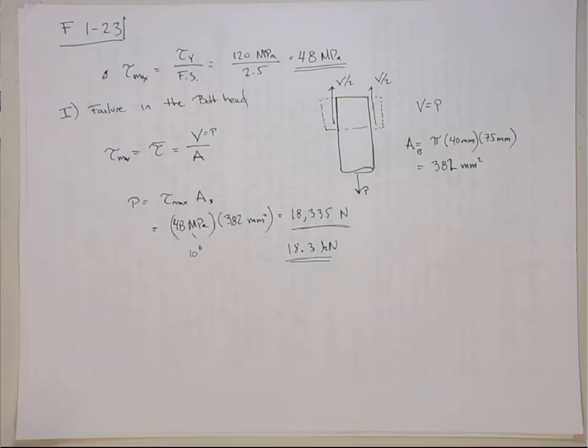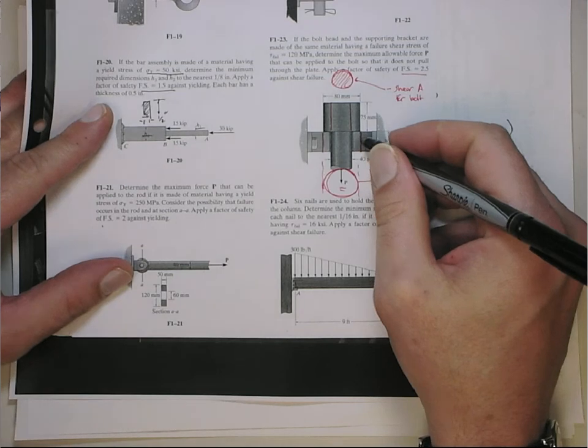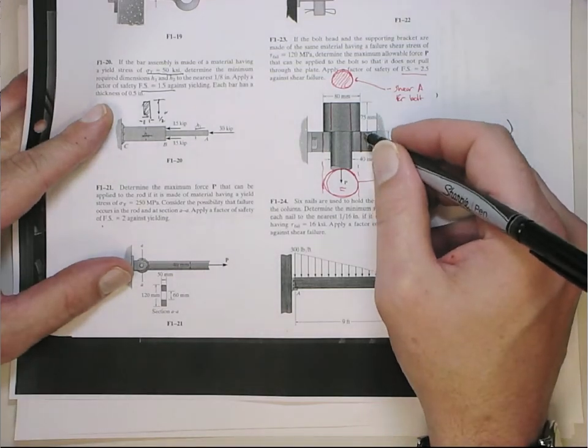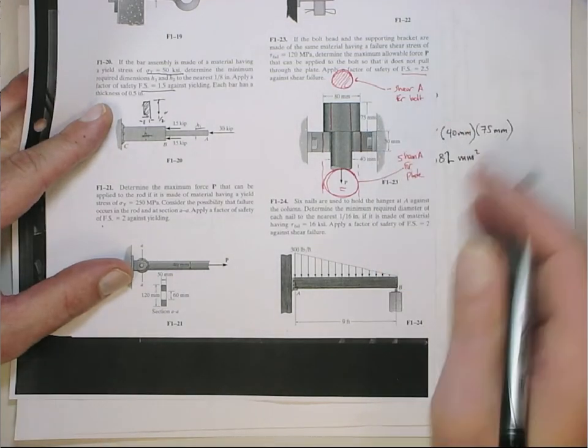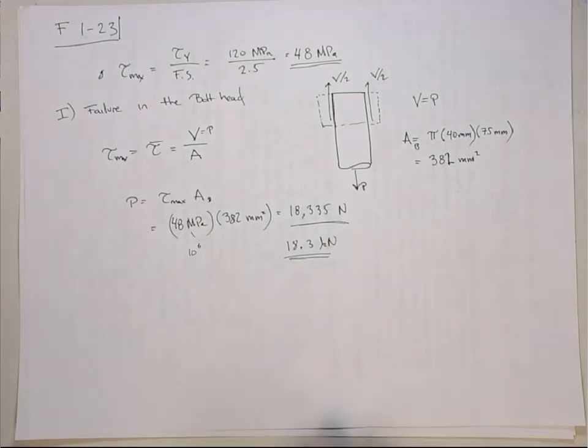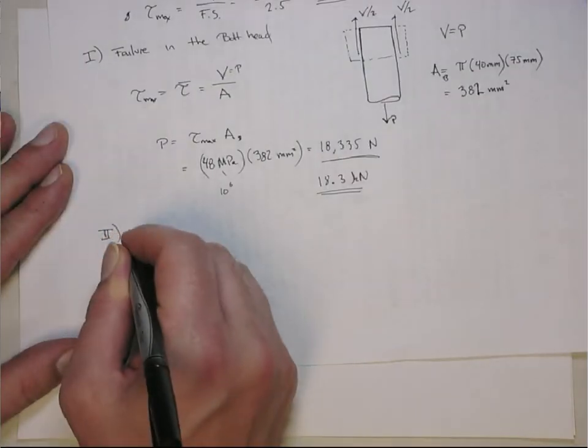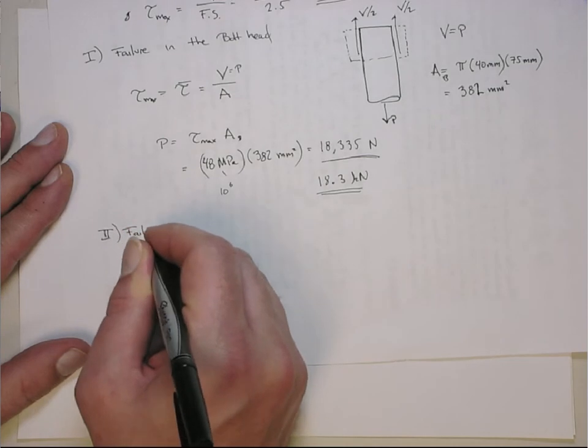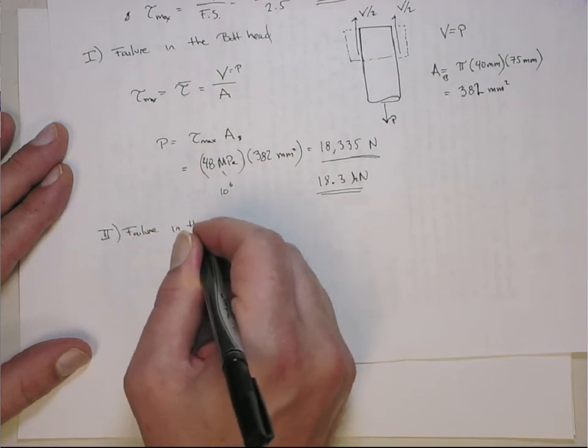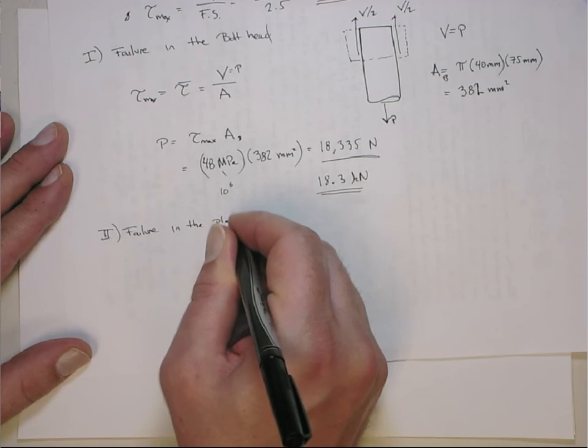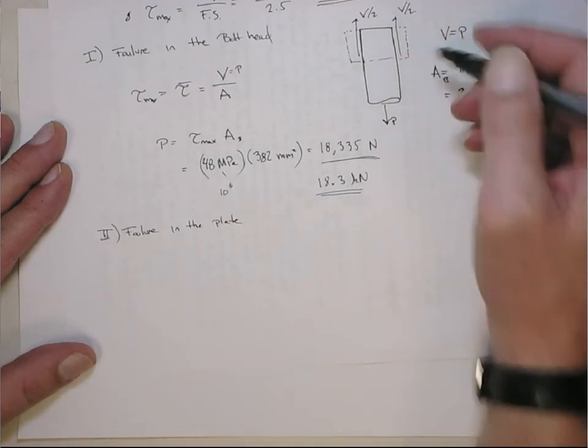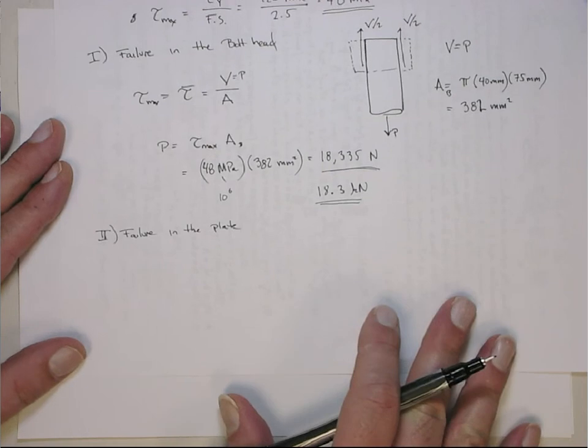Now, that might not be the max allowable. The failure might happen sooner in the plate. So if the failure in the plate happens at a lower P, then that's going to be our max allowable. So you have to pick whichever one's the lowest. So now we're going to look at case two. This is going to be failure, a shear pullout failure in the supporting plate.